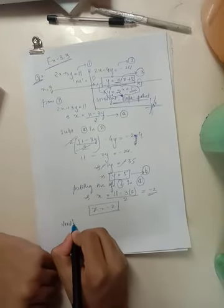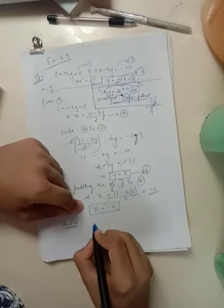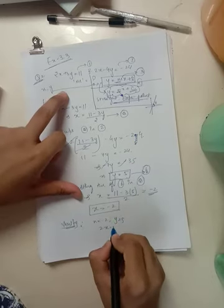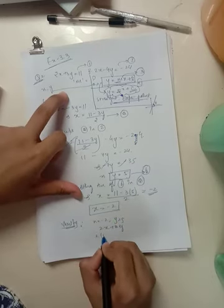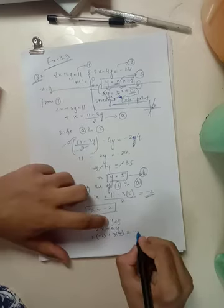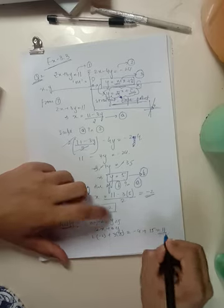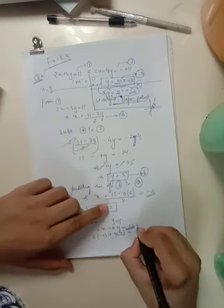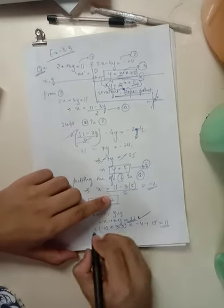So let's verify our answers. Just mentally we have got x equals to minus 2 and y equals to 5. Putting it in the equation we have 2 cross minus 2 plus 3 cross 5 which is equal to minus 4 plus 15 is 11 and RHS of this equation was also 11.